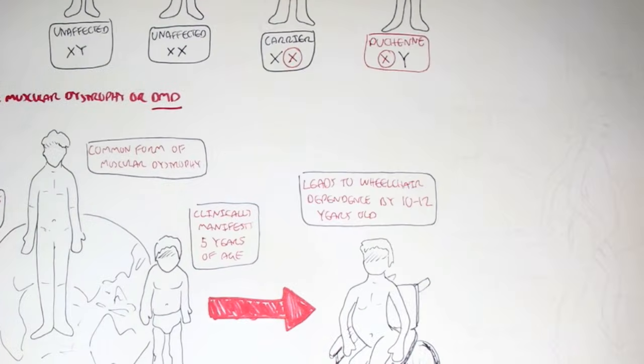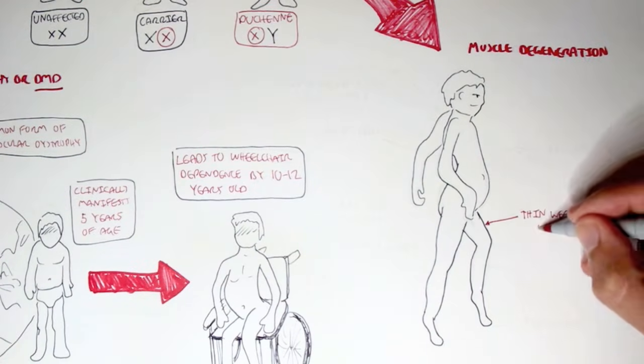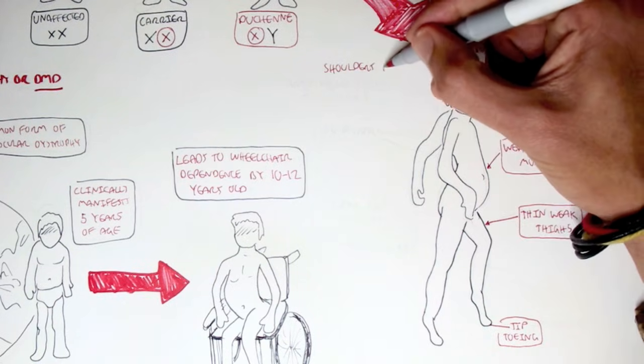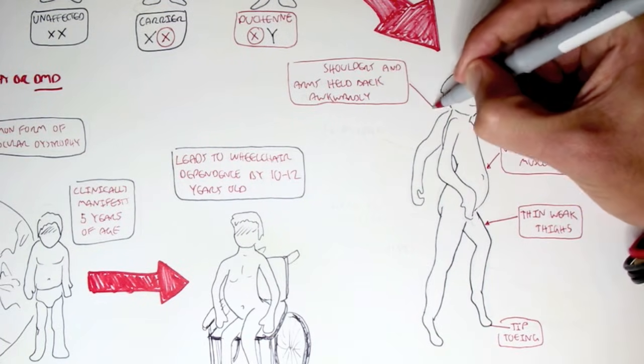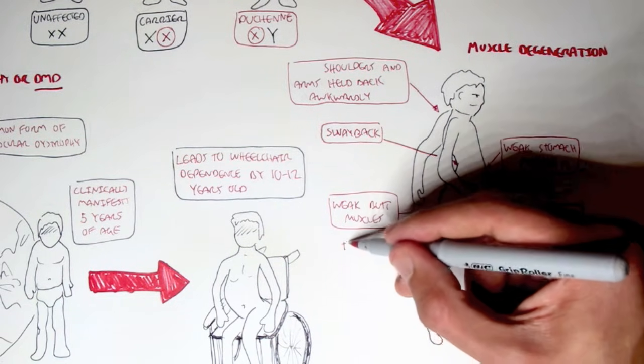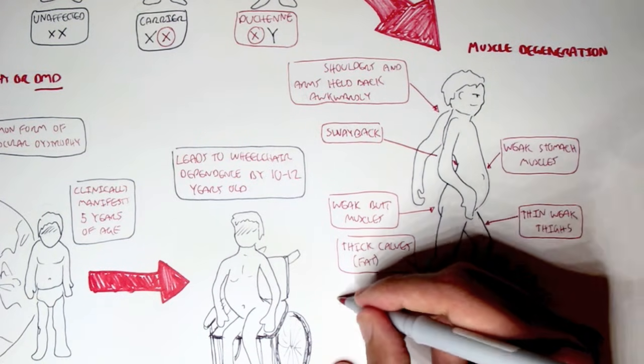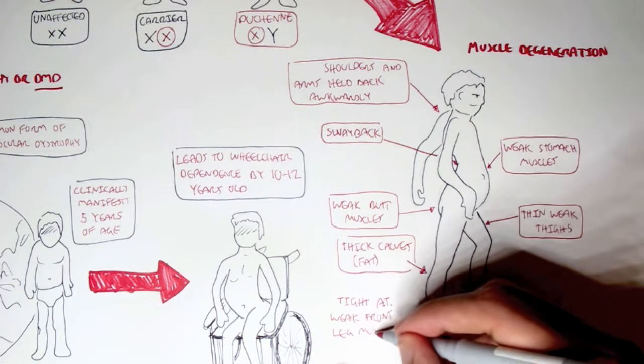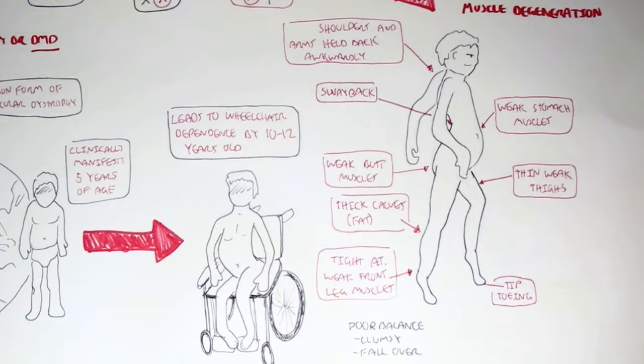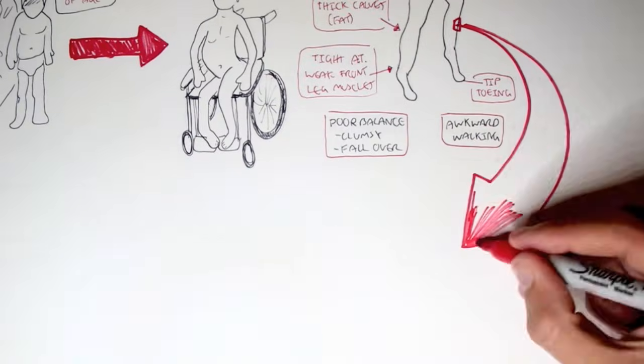Some symptoms associated with Duchenne muscular dystrophy. It's typically muscle degeneration. We can see thin, weak thighs, tiptoeing, weak stomach muscles which protrude the stomach out. We see shoulders and arms held back awkwardly, because of the weakness around that area. We have the swayed back, to compensate, and weak butt muscles, pushing the belly out even further. We have thick calves. However, not muscular calves. They mostly consist of fat. So, they're pseudo-hypertrophied. We also have tightness on Achilles tendon, and also weak front leg muscles, which contributes to the tiptoeing. Duchenne muscular dystrophy sufferers have poor balance. They're usually clumsy, and when they're children, they always fall over, usually. And there's also awkward walking seen in these sufferers.